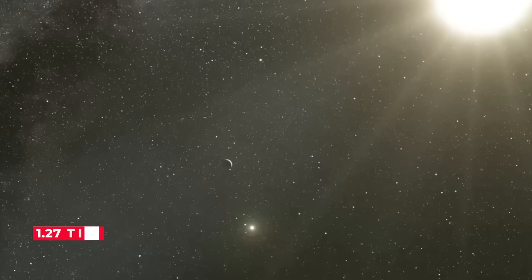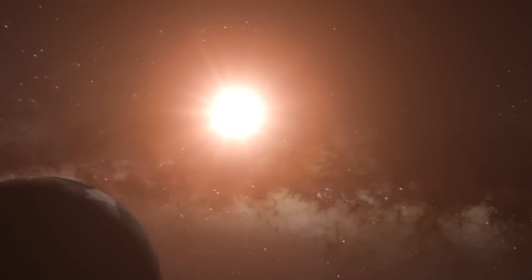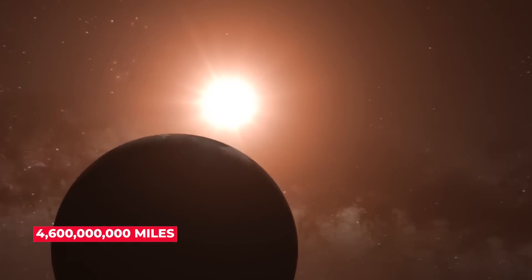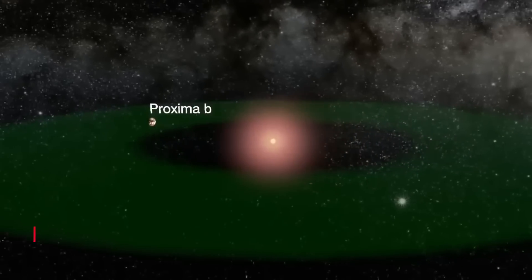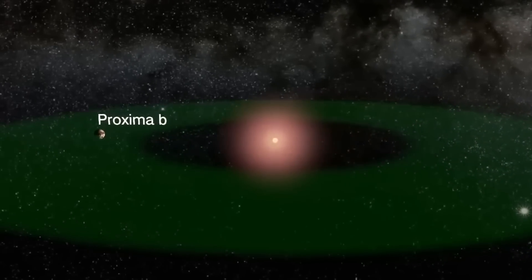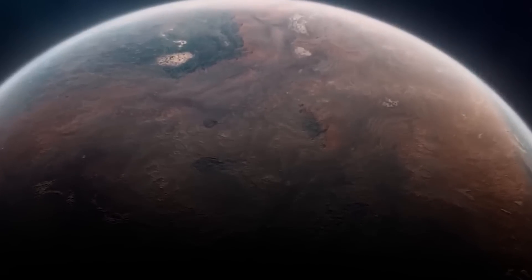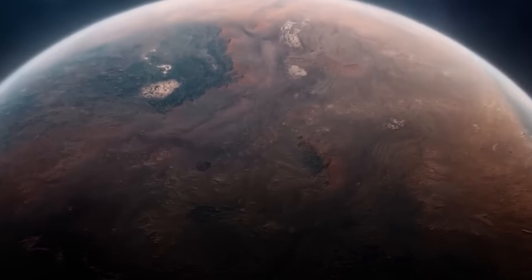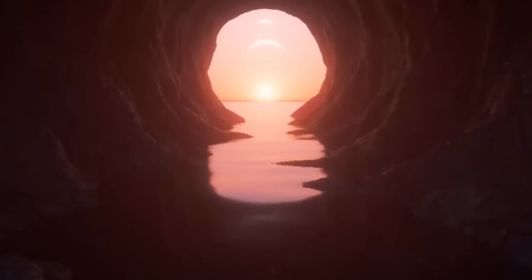Proxima b is 1.27 times the size of Earth. The distance between Proxima b and its Sun is 4,600,000,000 miles compared to the 93,000,000 miles between our Sun and their Sun. As a result, it is 5% further from the Sun. Given that Proxima Centauri is 4,000 times fainter than the Sun, do experts now believe that Proxima might support life?